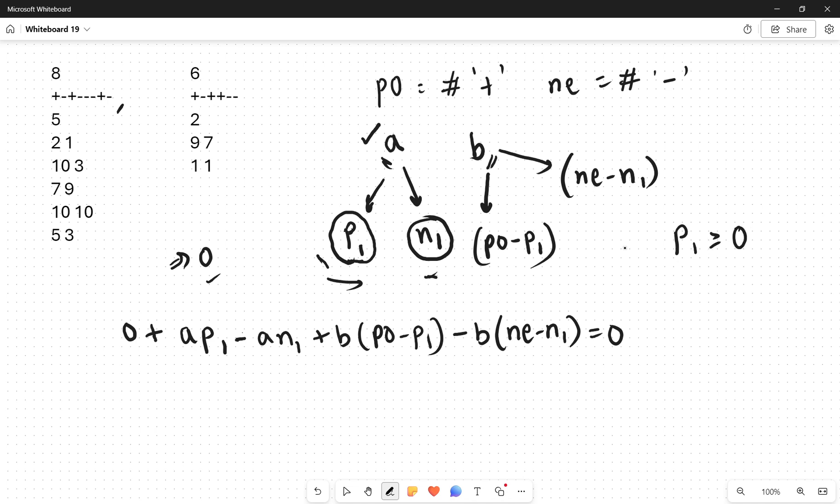Notice that p1 is greater than or equal to 0 and less than or equal to PO, and also n1 is greater than or equal to 0 and less than or equal to NE. This is the constraint because how can you select more positive characters or plus signs if there are not more than that.